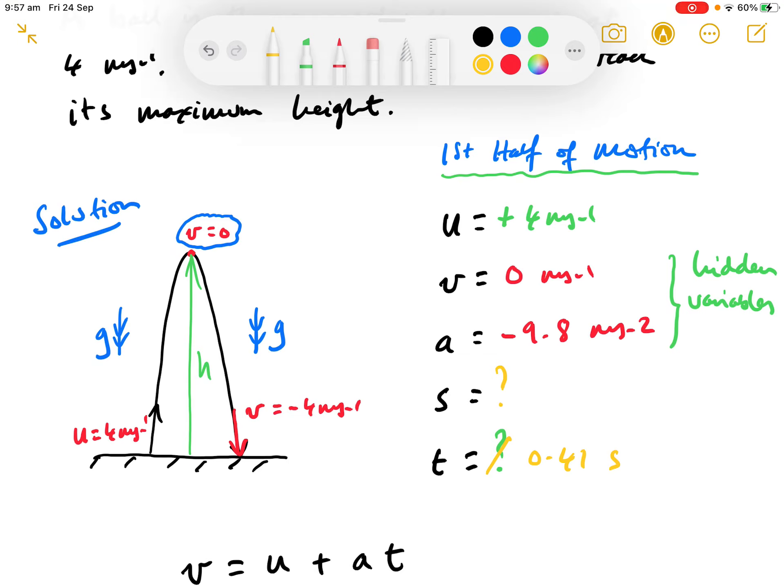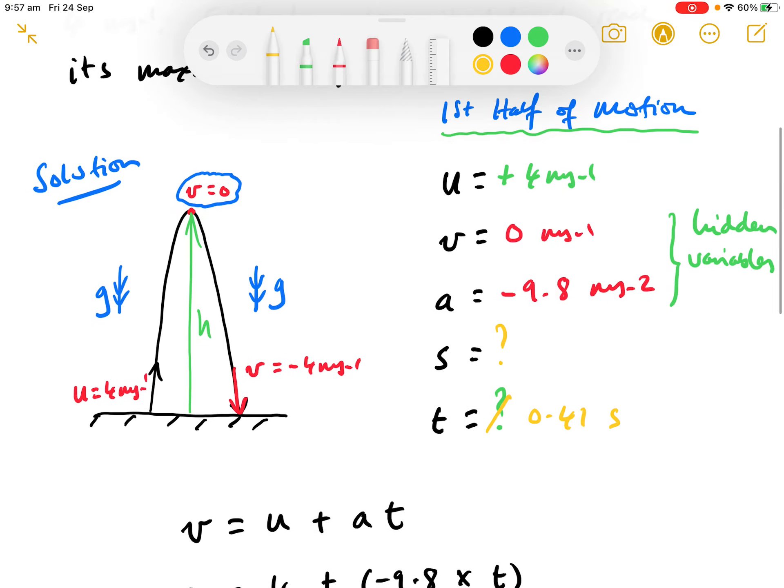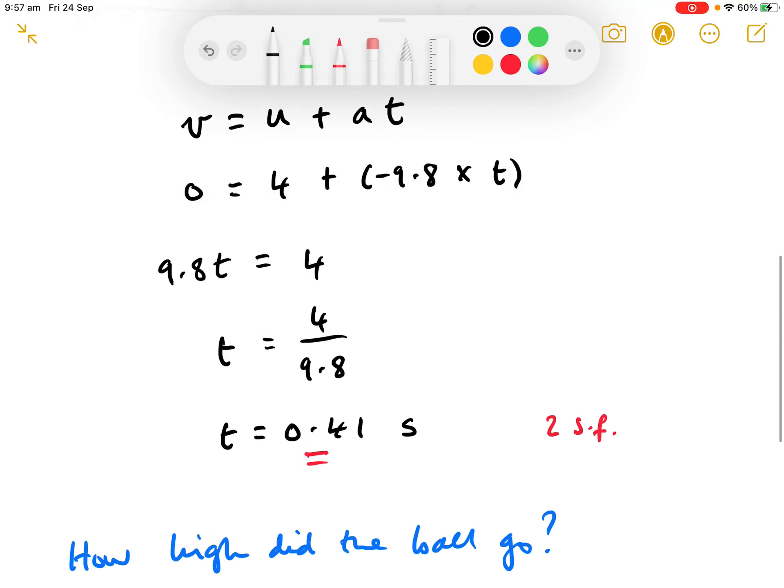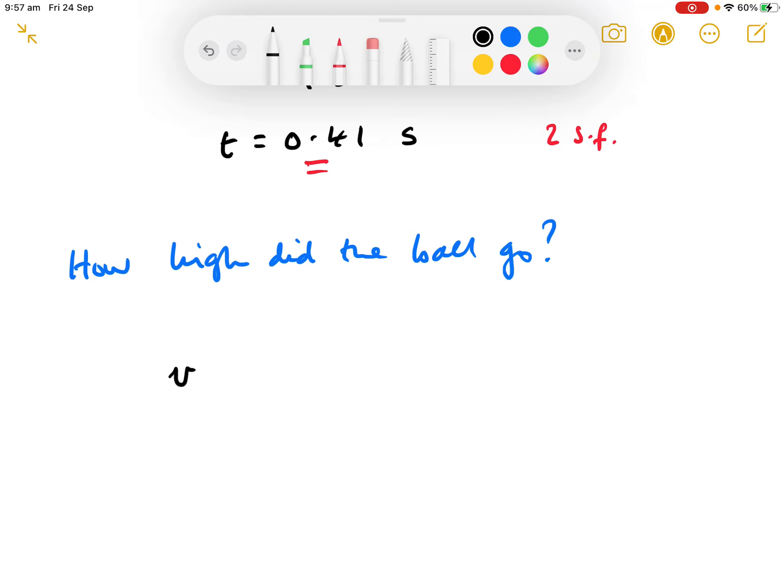So, there's, well, there are two ways of doing this. You can spot two equations, I'm sure, involving s. You've got s equals ut plus a half at squared. So, you could use that. Or you could use v squared as u squared plus 2as. So, I'm going to use that one. So, same variable list, so I can just go straight to v squared equals u squared plus 2as.